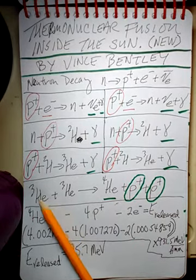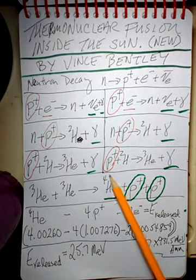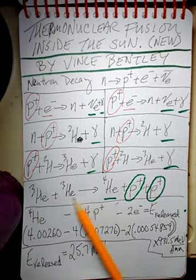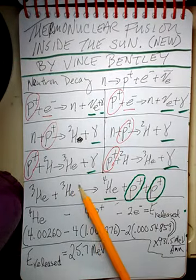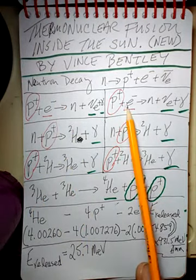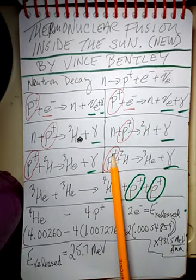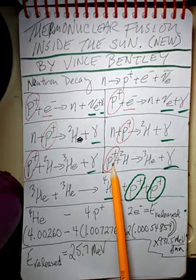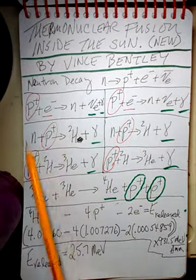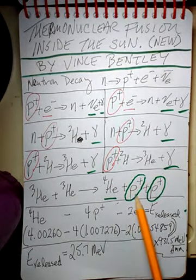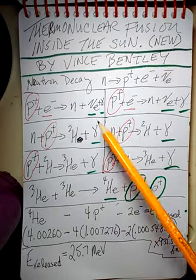Helium-3 plus helium-3 will give you helium-4 — which is two protons and two neutrons, a very stable isotope of helium — plus two protons that are ejected from this fusion. Looking at the whole reaction, six protons go into the reaction and two protons come out of the end reaction. So six minus two means this reaction costs the Sun four protons.